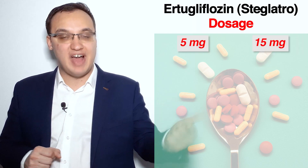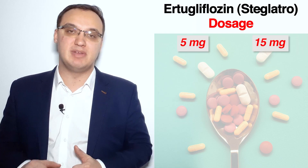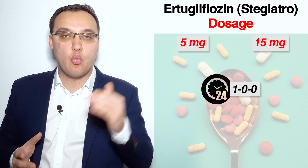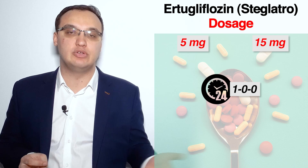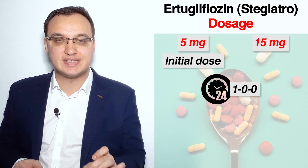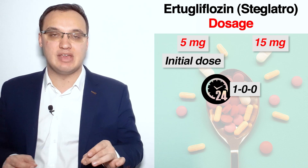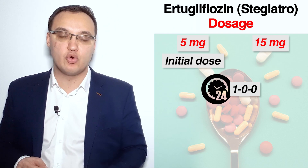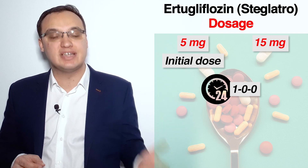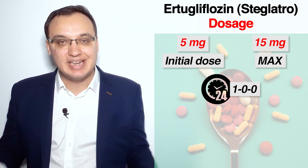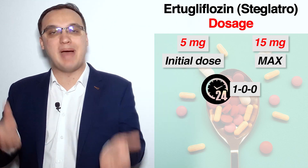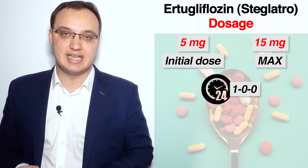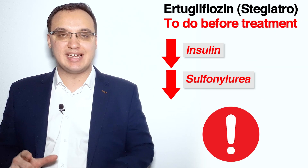Steglatro can be given in two types of doses: 5 milligram and 15 milligram. This medication can be given in the morning with or without food. The initial dose is always 5 milligram once daily in the morning, and if necessary the dose can be increased from 5 milligram up to 15 milligram once daily.